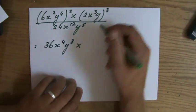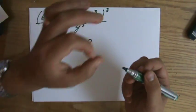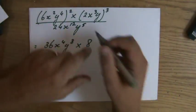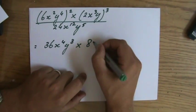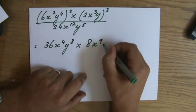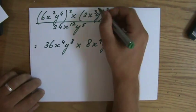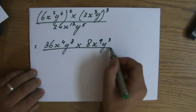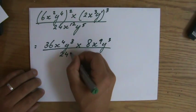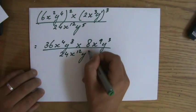Times 2 to the power of 3. Is 8. It's not 6. It's 8. 2 times 2 times 2. X to the power of 3 to the power of 3. X to the power of 9. Y to the power of 3. Because that is actually a 1. And all of that divided by 24x to the power of 12, y to the power of 5.